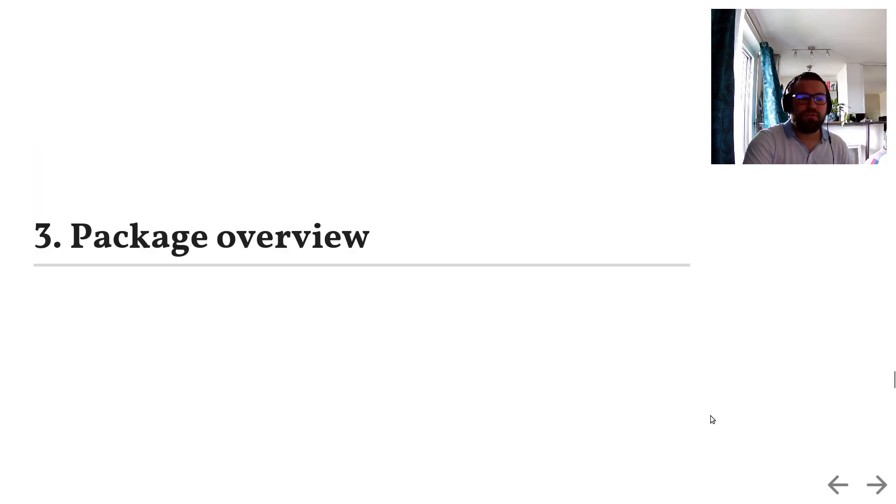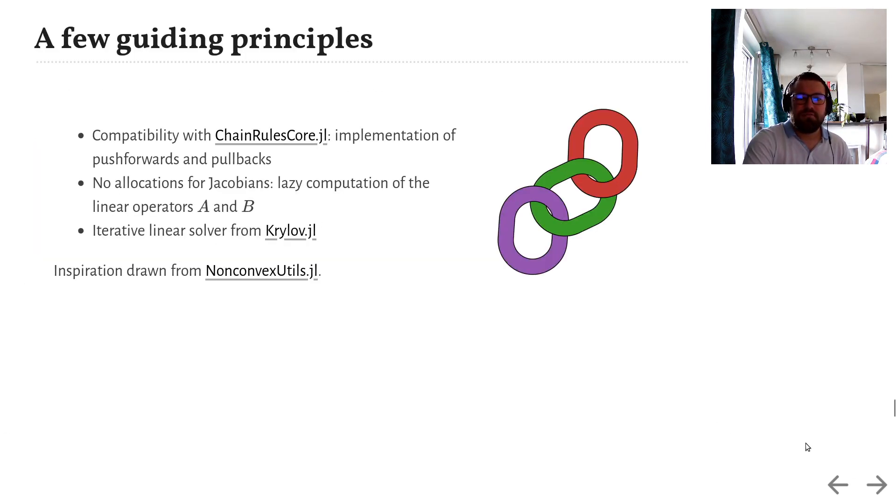Now, I'm going to give you a brief overview of what's inside the package. We designed it with a few principles in mind. We wanted it to be compatible with ChainRulesCore, that is, implementing push forwards and pullbacks. We didn't want to allocate Jacobians because sometimes you have millions of variables and you cannot afford to fill a matrix of size n squared. So, we opted for lazy computation of the linear operators A and B. And luckily, this works pretty well with iterative linear solvers such as those from the Krylov package. For all of this, we drew lots of inspiration from the basic implementation provided in NonconvexUtils by Mohamed.